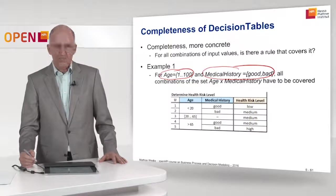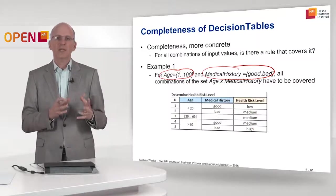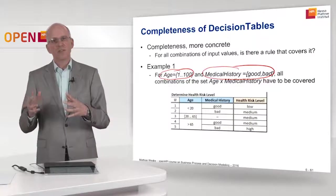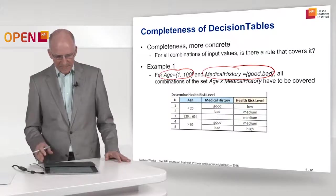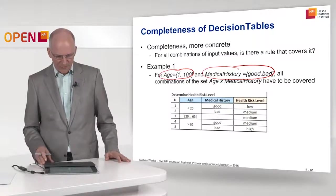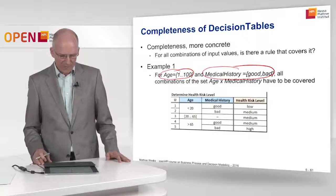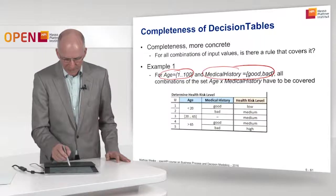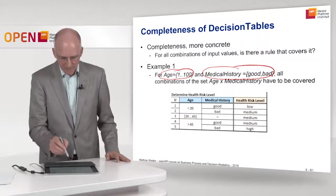The Cartesian product of two sets is the set of pairs where the first element of the pair is an element of the first set — here, age — and the second element is an element of the medical history set. So let's investigate the property for this example. Looking at the age first, all input values where the age is smaller than 20 are covered, because we have inputs for both values of the medical history, namely good and bad.